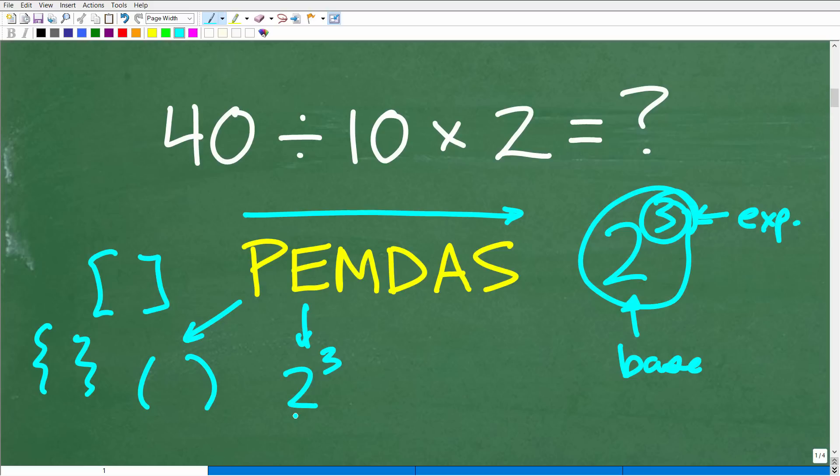Okay. So now let's talk about what M, D, A, and S stand for. So you might be thinking to yourself, what does M stand for multiplication, D, division, A, addition, and S, subtraction? And you would be correct. Okay. That's what M, D, A, and S stand for.